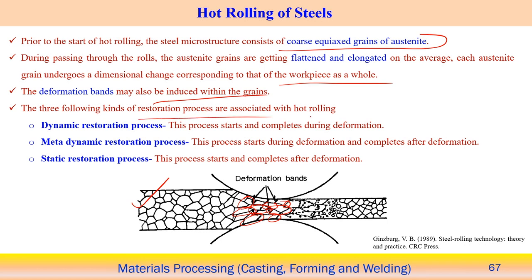There are three kinds of restoration processes that can achieve a fine grain structure in hot rolling. The dynamic restoration process starts and completes during the deformation. The metadynamic restoration process starts during the deformation but completes after deformation. The static restoration process starts and completes only after the deformation. These are the typical consequences of the different restoration processes, depending upon the sequence relative to the deformation.